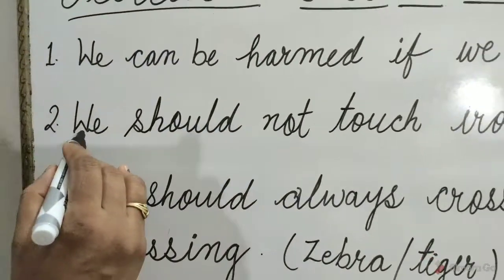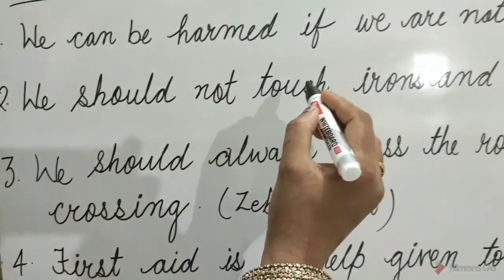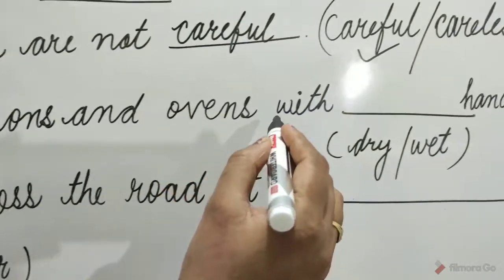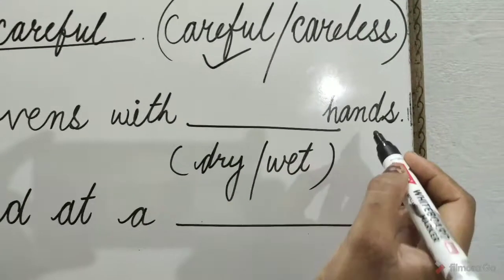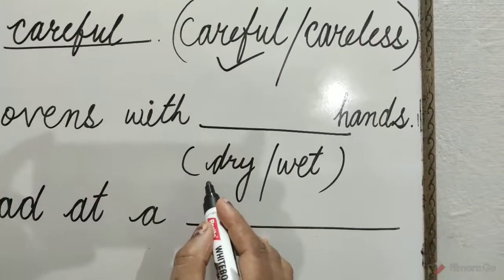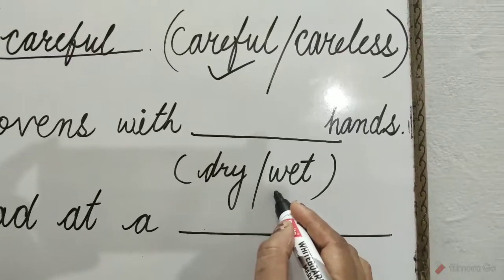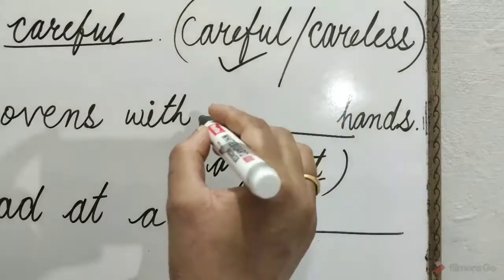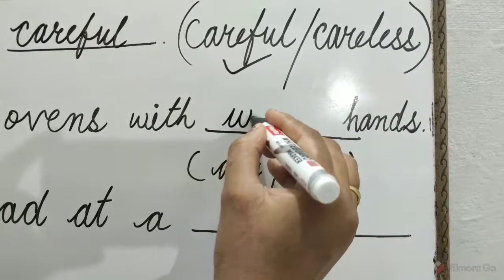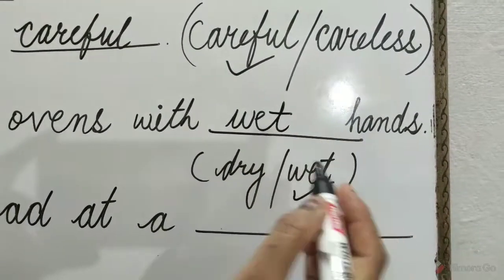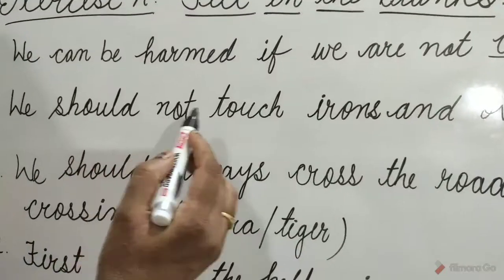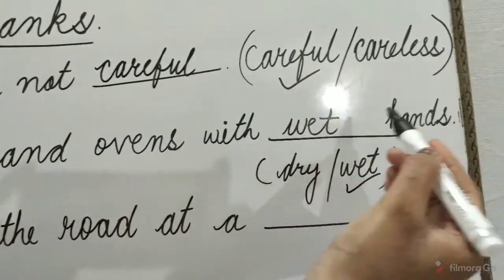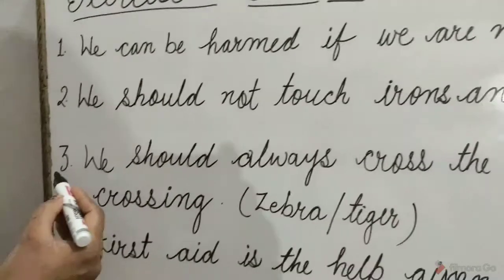Question 2: We should not touch irons and ovens with blank hands. The options are dry and wet. The wet option is correct. So tick on wet and write here: wet. We should not touch irons and ovens with wet hands.